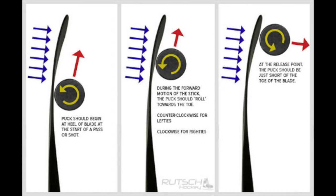The gyroscope effect works because as the puck is rotating, it resists change from the axis it is on and instead goes in a straight line. The amount of curvature the blade has affects the amount of spin the puck has.